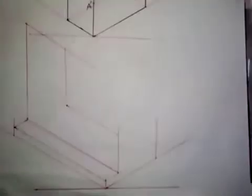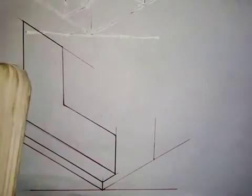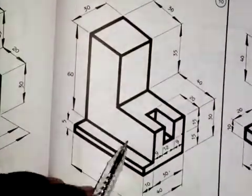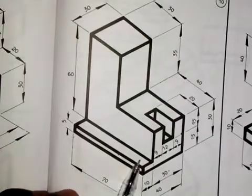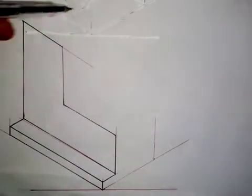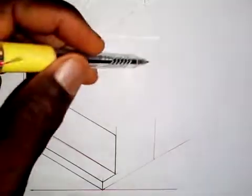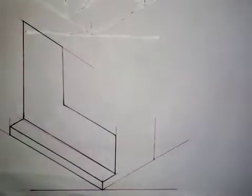So looking at what we have here, I've drawn part of this. Let me bring out what we have done before we continue. So this is the shape that we have produced. We have produced this shape, and we have also produced this shape and this shape here. So what we need to do now is that at every point we have on this object, we are going to draw a line to this side from each point. That's what we are going to do.